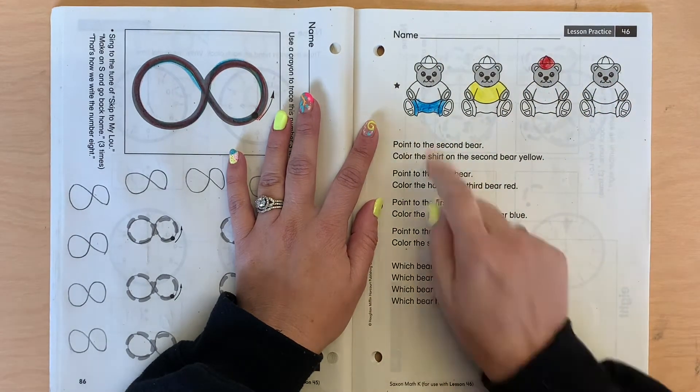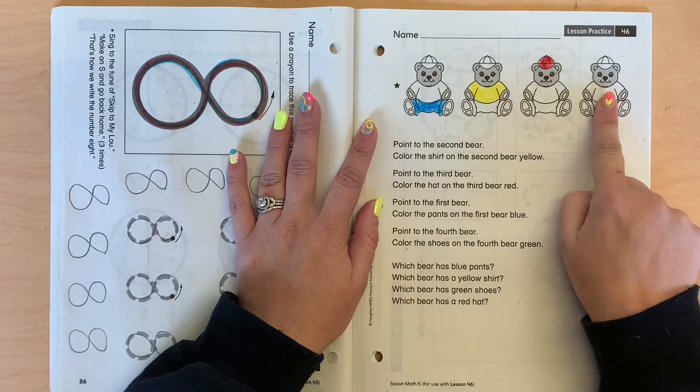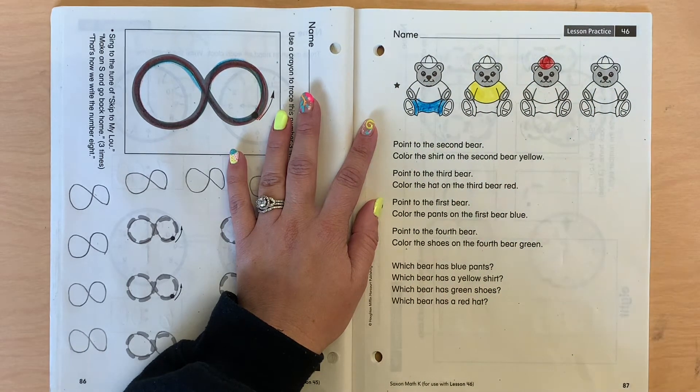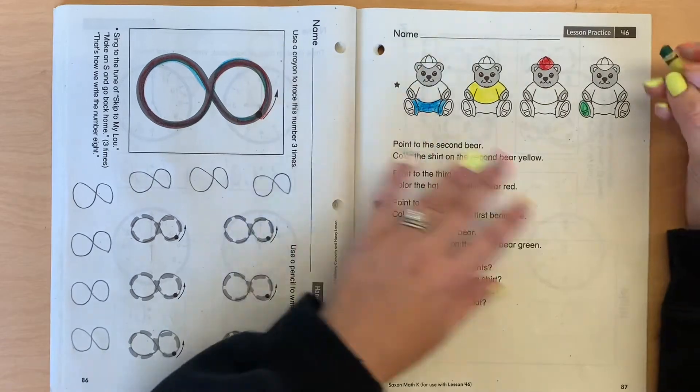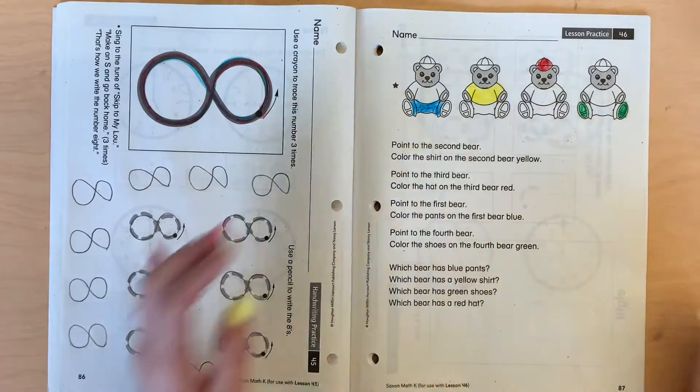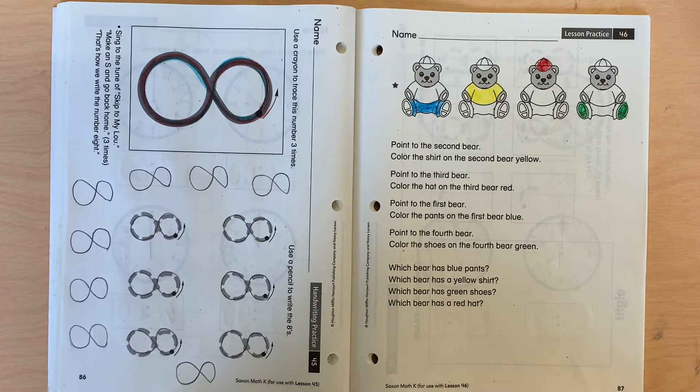All right. Point to the fourth bear. First, second, third, fourth. Color the shoes on the fourth bear green. So his shoes. There we go. And then let's listen. You're going to be a good listener. You're going to put your finger on or tell me using the ordinal number.